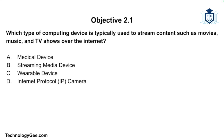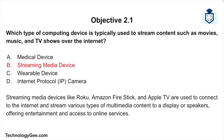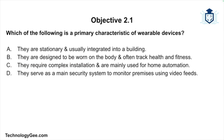Next question: which type of computing device is typically used to stream content such as movies, music, and TV shows over the internet — a medical device, a streaming media device, a wearable device, or an IP camera? The answer is a streaming media device. Devices like Roku, Amazon Fire Stick, and Apple TV connect to the internet and stream various types of multimedia content to a display or speakers, offering entertainment and access to online services.